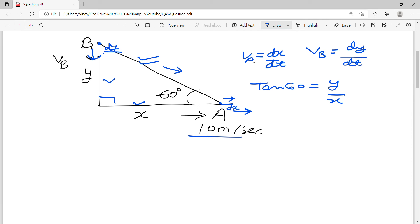Tan 60 is root 3, you should remember these values. So y equals x root 3. What you can do is just differentiate it. You need dy by dt, so here it becomes dx by dt into root 3. dy by dt, we need to find vB. dx by dt is 10, so 10 root 3. This is your answer, meter per second.